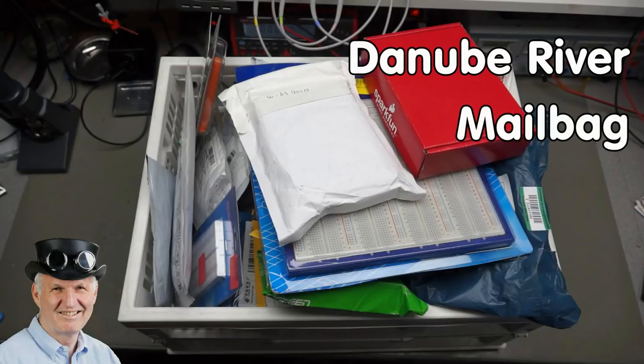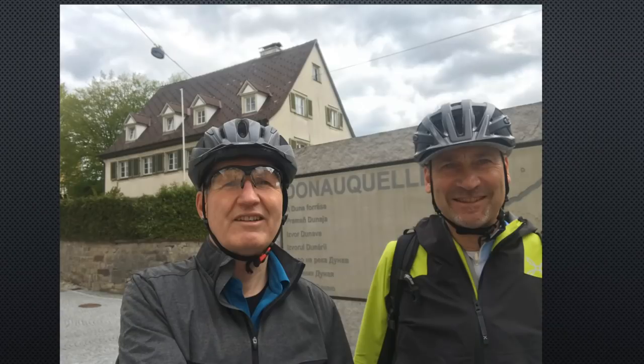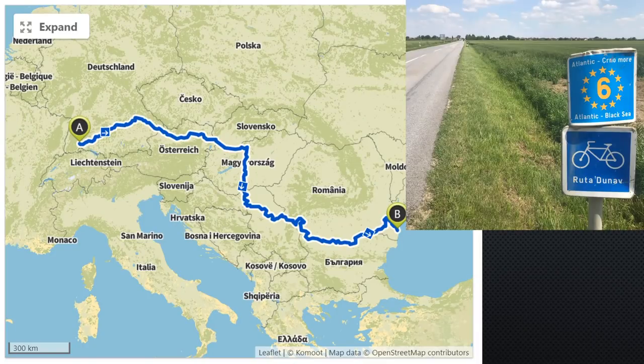Remember, if you subscribe, you will always sit in the first row. We started our journey in Donaueschingen in Germany, followed the Atlantic to Black Sea No. 6 route.